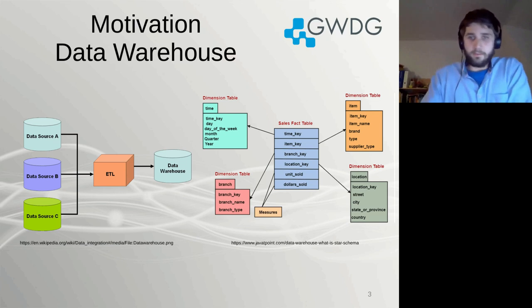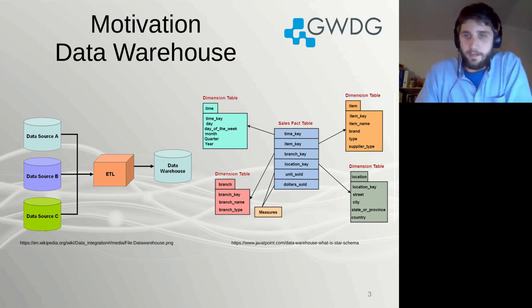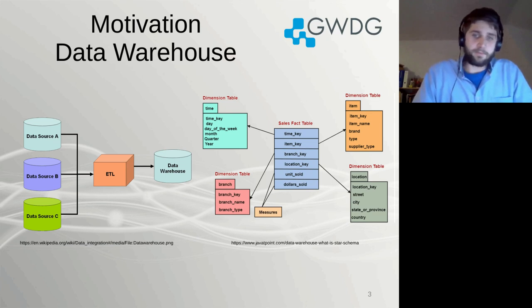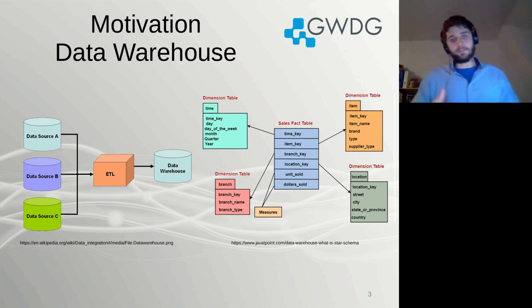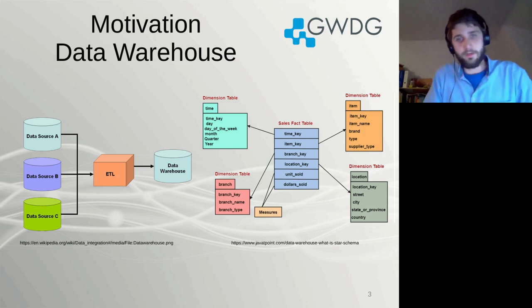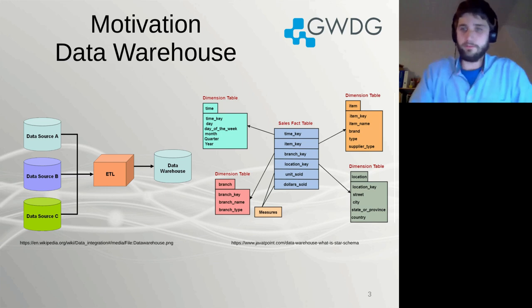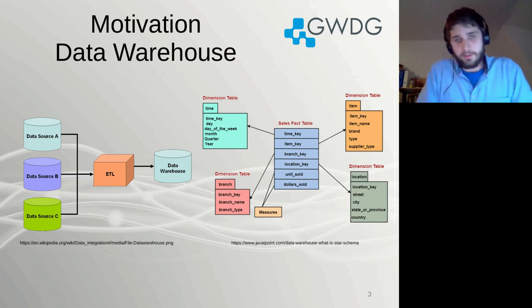The idea of a data warehouse is that you pre-define a fixed schema at the beginning — for example, a star schema. Then you have an ETL process running which extracts data from the different data sources, which can also be those data silos, transforms the data in the staging area, and then loads the transformed data into this predefined schema. And there are a few disadvantages with this approach.